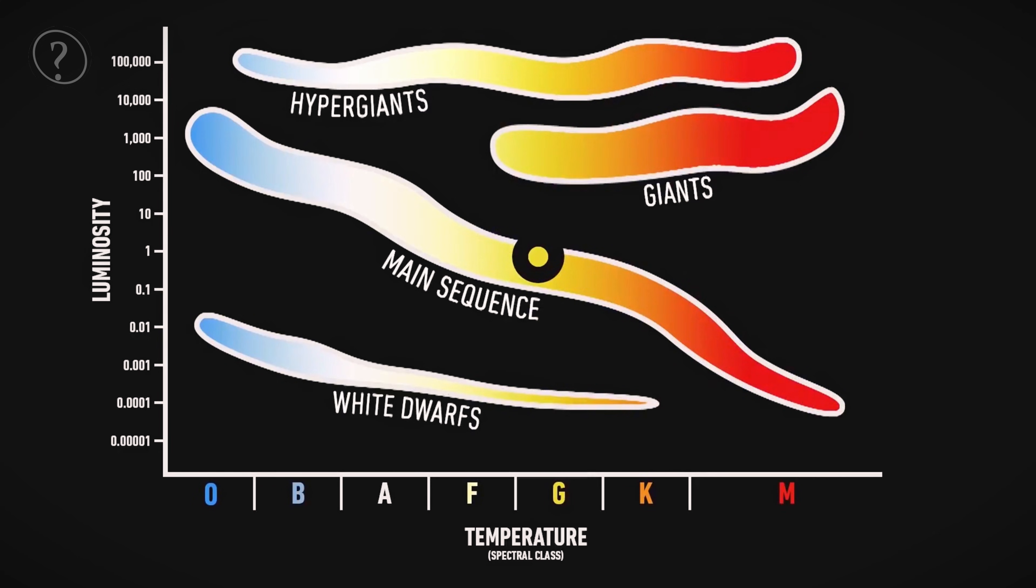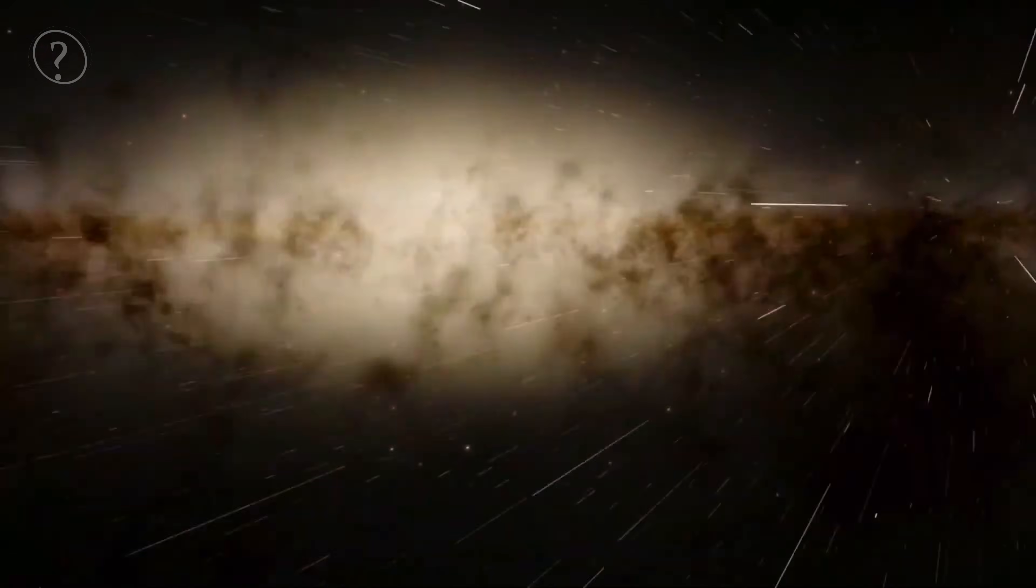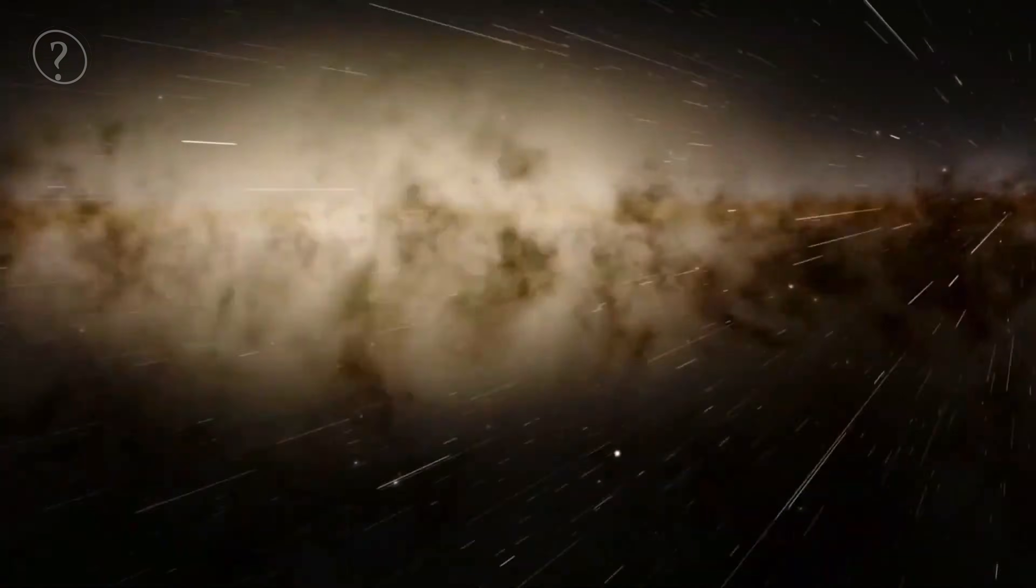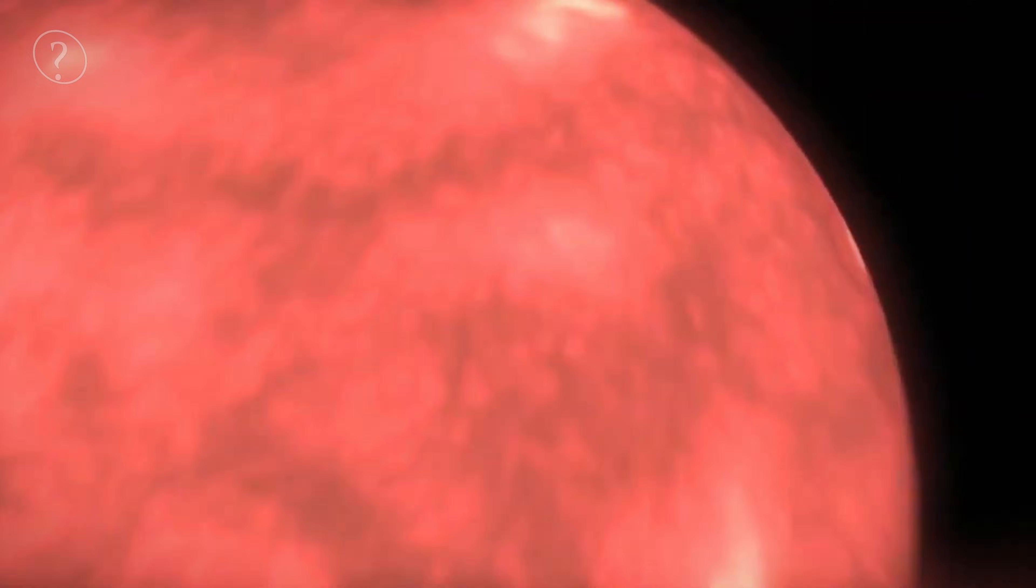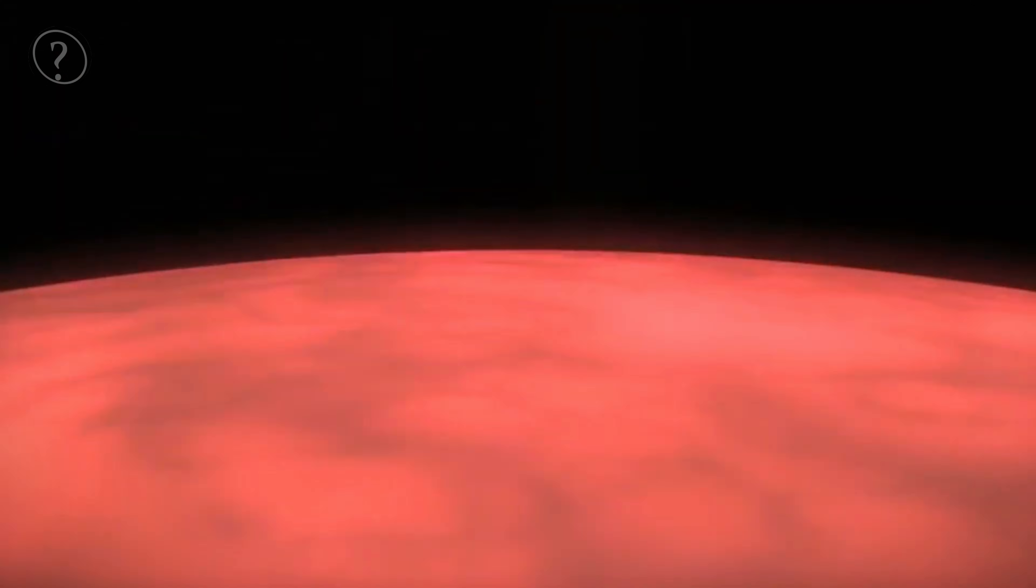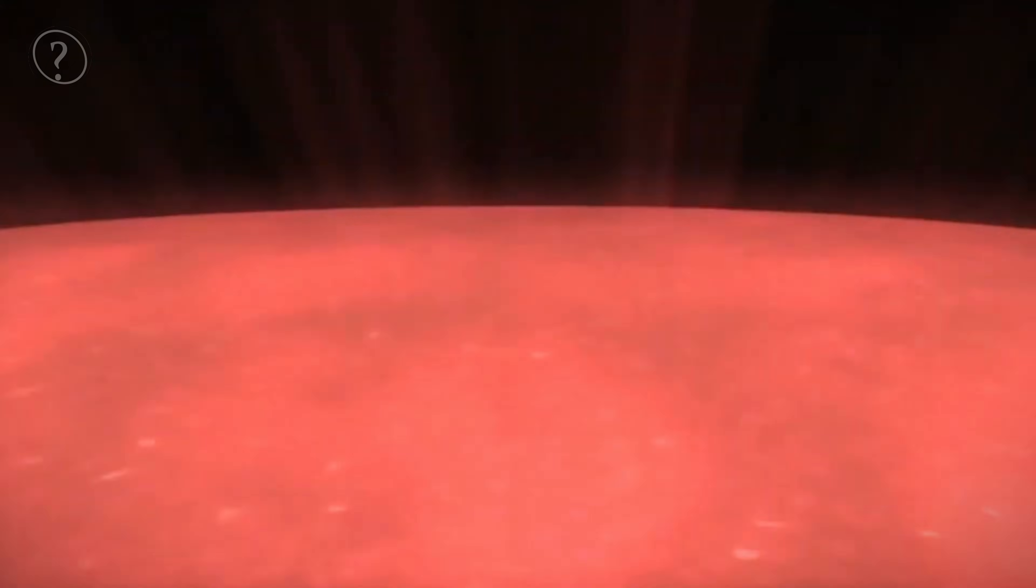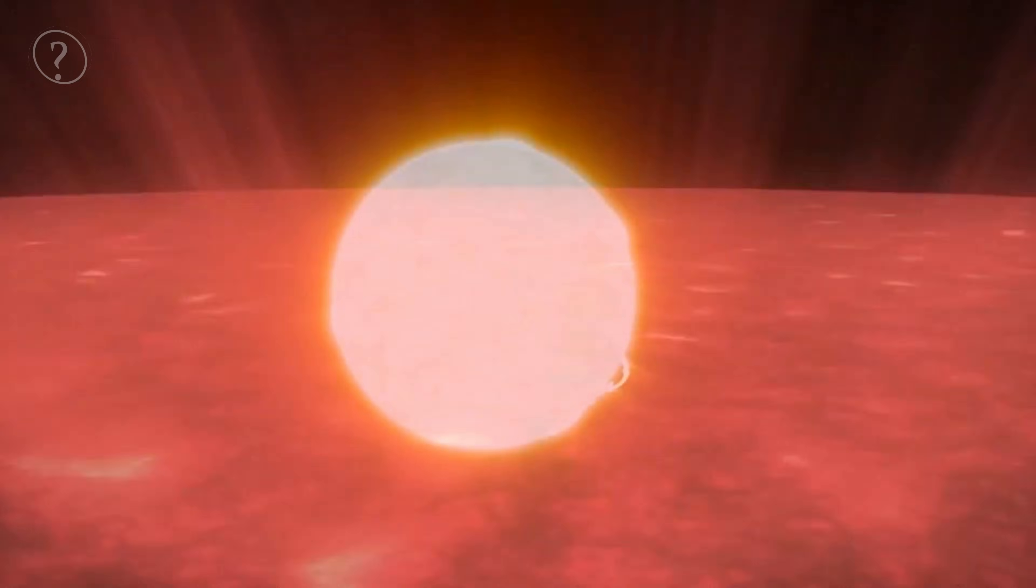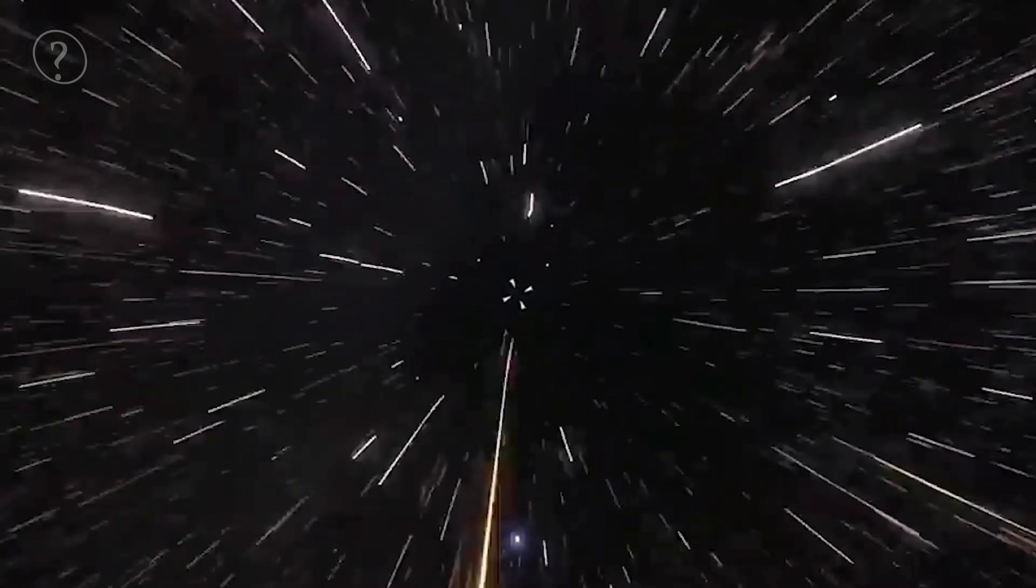UY Scuti is located about 9,500 light years away from Earth, which means we're seeing it as it was 9,500 years ago. An image of the distant past. It's amazing to think that what we see today is a snapshot of the universe from millennia ago. But even with these challenges, the measurements show that UY Scuti is a star that stands tall in the cosmos, not just in size but also in its significance for understanding stellar evolution and cosmic dynamics.